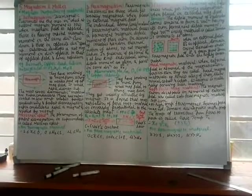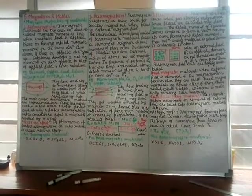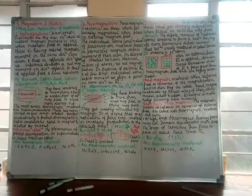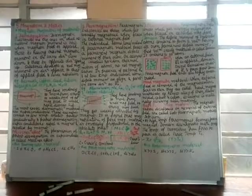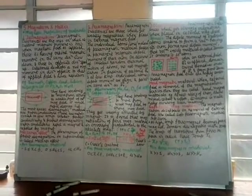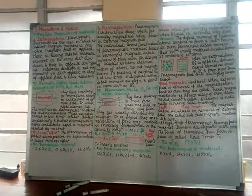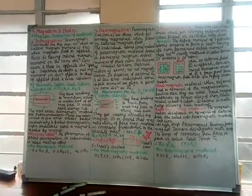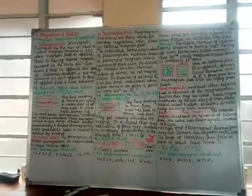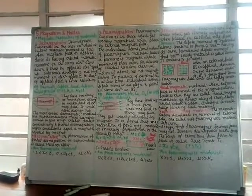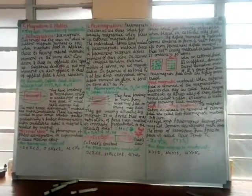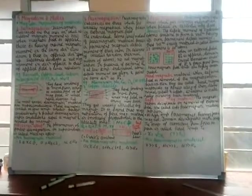Physics class 12, chapter 5: magnetism and matter. We are doing magnetic properties of materials. We have completed diamagnetism and paramagnetism. Diamagnetic materials, when placed in an external field, get a magnetic moment in the opposite sense to the external magnetic field. In paramagnetism, they get weakly magnetized when placed in the external magnetic field. Now we'll continue with ferromagnetism.